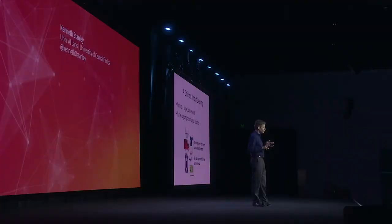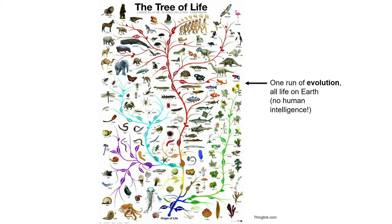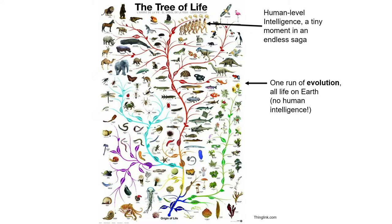How can you have open-endedness without solving the problem of human-level AI? Well, look at this — this thing here is not from human intelligence or human engineering. This is the tree of life. This is a single run, so to speak, of an algorithm called evolution, which generated all of life on Earth. And right here, this one little moment in this endless saga is human-level intelligence. A process that was open-ended produced the only example ever to produce intelligence at the human level, among many, many other things.